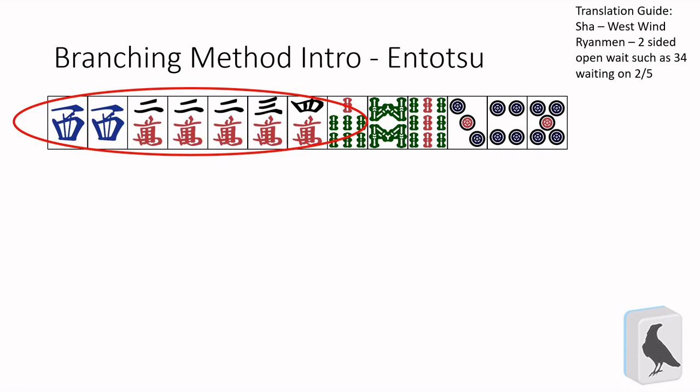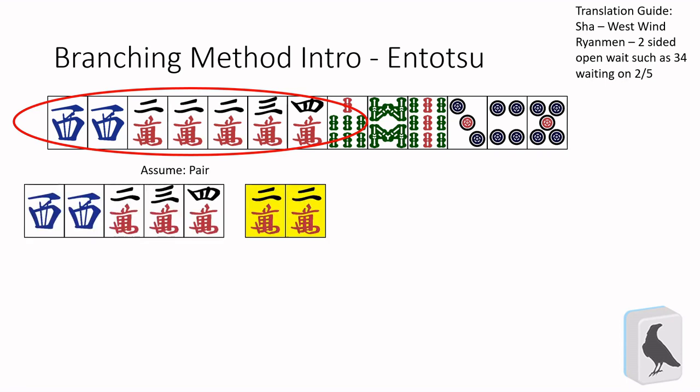Let's take a look at the pair branch first. When the twos are grouped as a pair, the two-three-four groups together very nicely. We can easily see that getting a sha or a two-mon are the only ways to make the second set with these tiles, with the grouping as it is. So that means the shape waits on a sha and a two-mon.